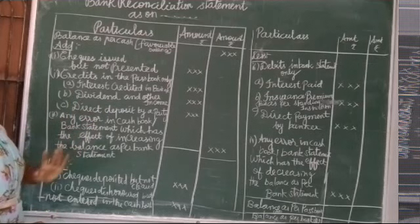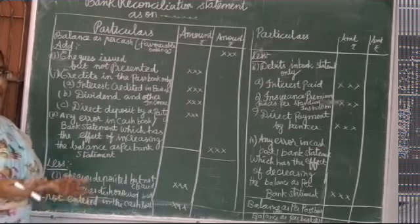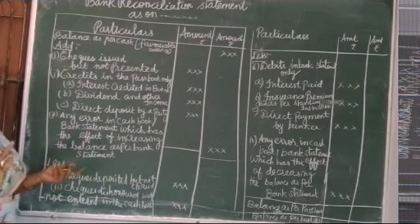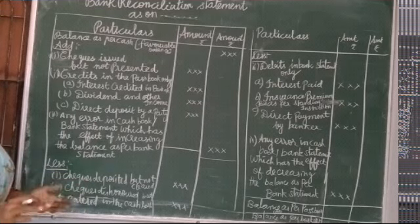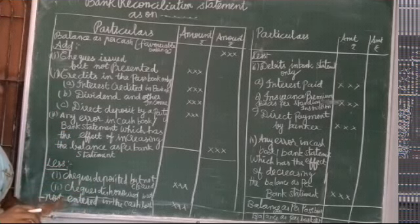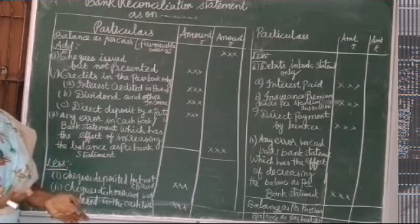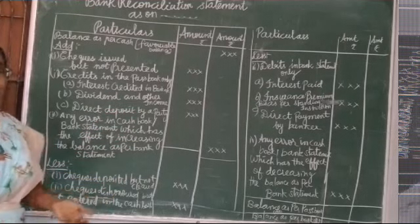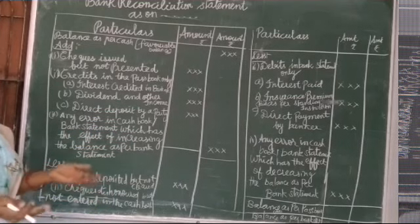Then interest credited in the bank. Dividend and other income — we have received so many shares or mutual funds, and for that we are getting the dividend, which is directly credited in our bank. Directly deposited by a party — yesterday we came across the transaction where amount is paid by Ravi directly. So these are all the transactions we have to add. And then any error in cash book or bank statement which has the effect of increasing the balance. If any error in the passbook is credited twice, then here in the cashbook also we have increased the balance. So if we add this error, then only we can reconcile — cash book equal to pass book.